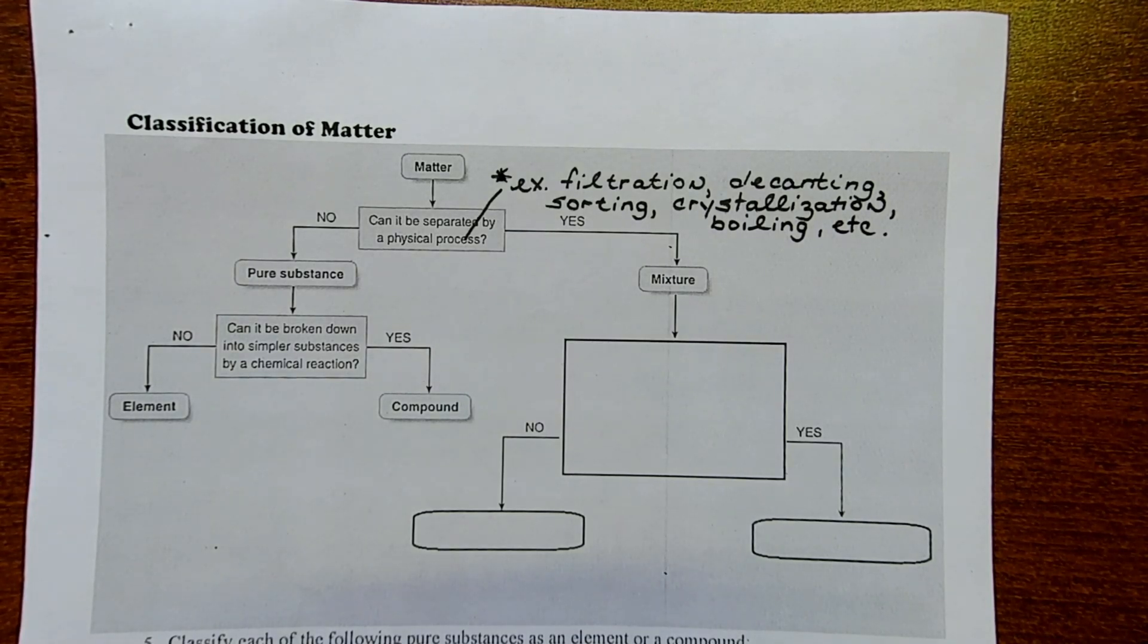Crystallization is when you slowly cool something and cause crystals to form. Sometimes people do this to make rock candy. Boiling. When I wrote that down, I was thinking about desalination. If I wanted to separate salt from water, I would boil off the water and that would leave the salt behind. So all of these are examples of physical processes. And if the answer to that is yes, it can be separated by a physical process, then you're dealing with a mixture.